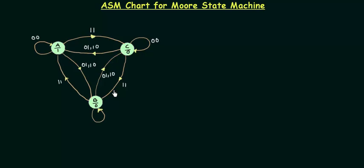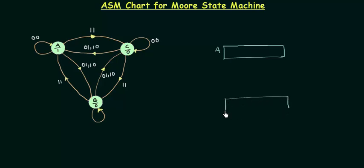We have three states in this state diagram: A, C, and B. So I will make three state boxes. The state box is a simple rectangular box. This one is for state A, this one is for state B, and finally we have the state box for C.